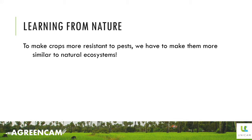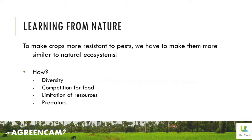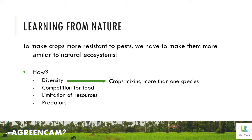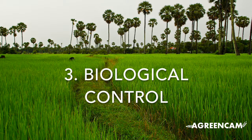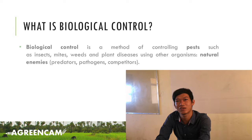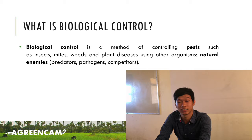To achieve diversity, some investigations have shown that crops mixing more than one species are less exposed to pests. Another very interesting way to control pests that imitates nature is biological control, which is the main topic of this video. So, first of all, what is biological control? Biological control is a method of controlling pests, insects, and plant diseases using organic and natural enemies.